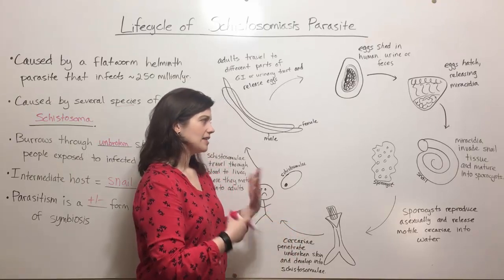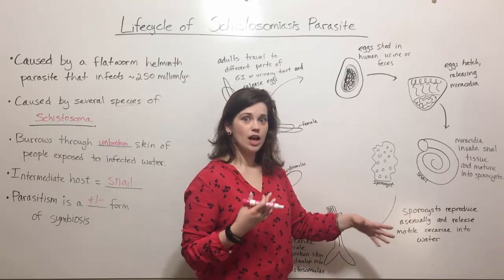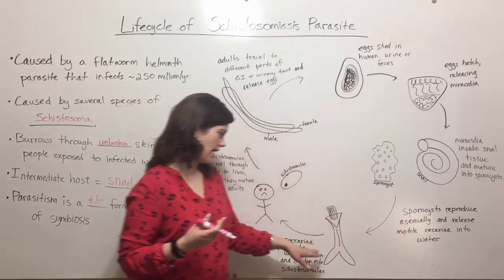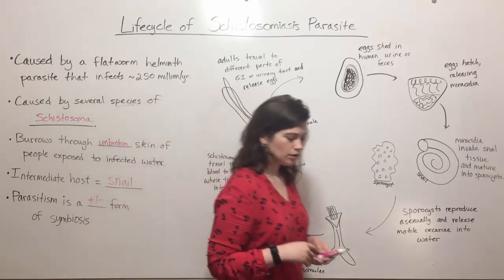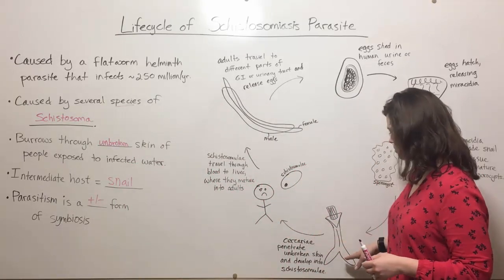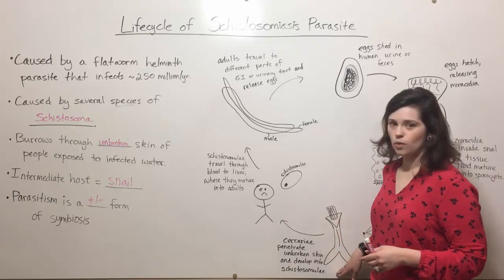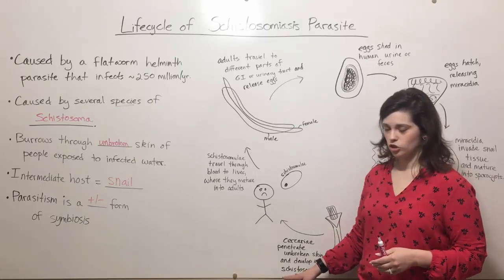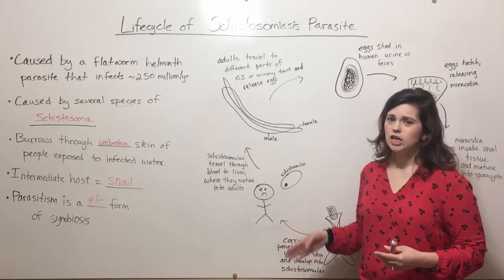As the sporocysts reproduce asexually, they release another developmental stage called cercariae into the water. Cercariae are motile — that means they can swim. The cercariae in the water then develop into another form called schistosomulae.